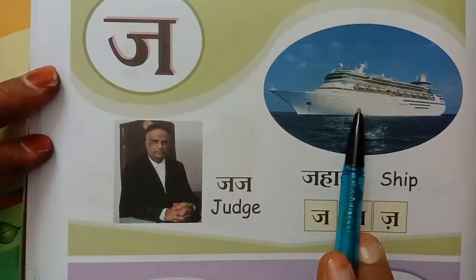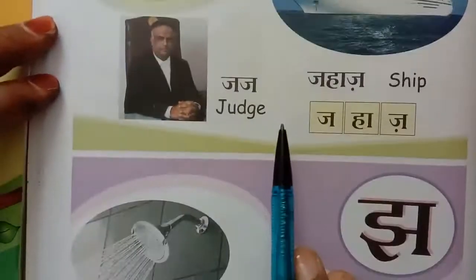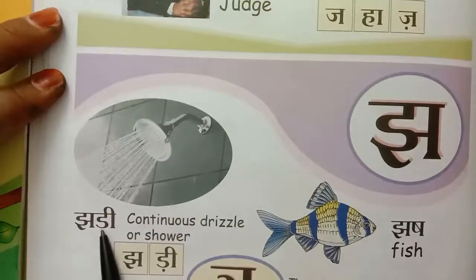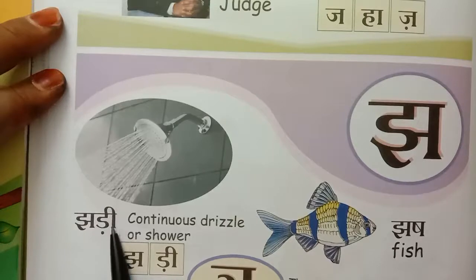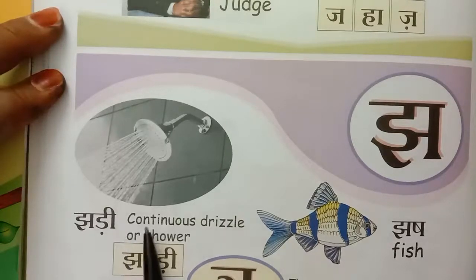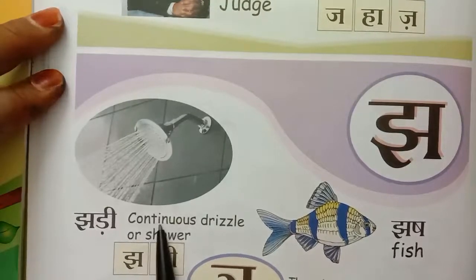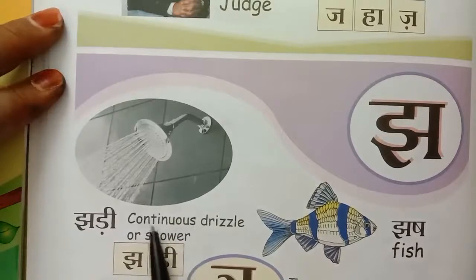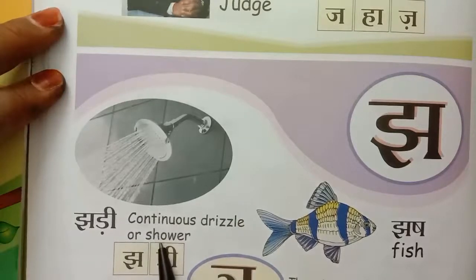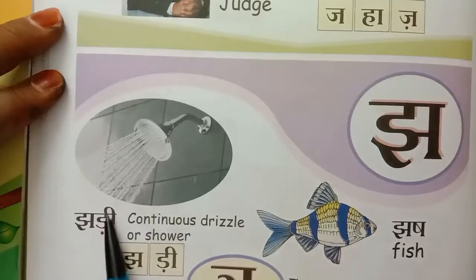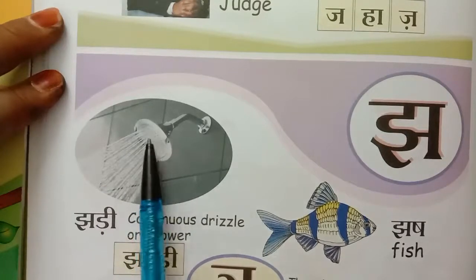JAHAJ means Ship. Next, DRIZZLE — D-R-I-Z-Z-L-E — or SHOWER, S-H-O-W-E-R. JAD means Shower.